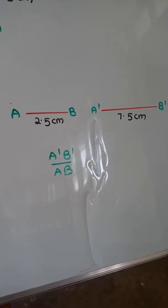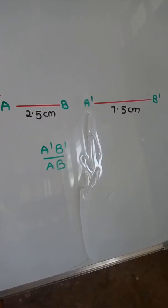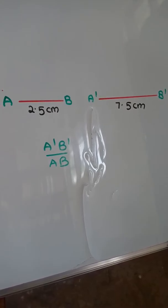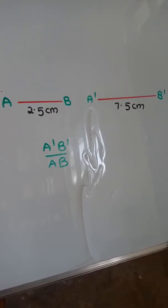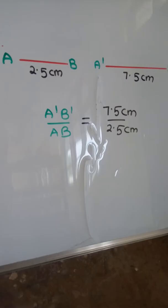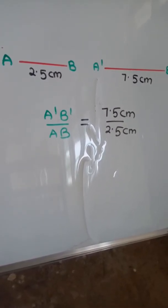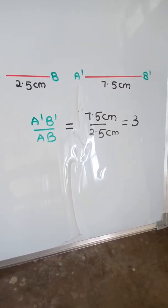So when we take AB' over AB, which is equal to 7.5 cm divided by 2.5 cm, which is equal to 3.